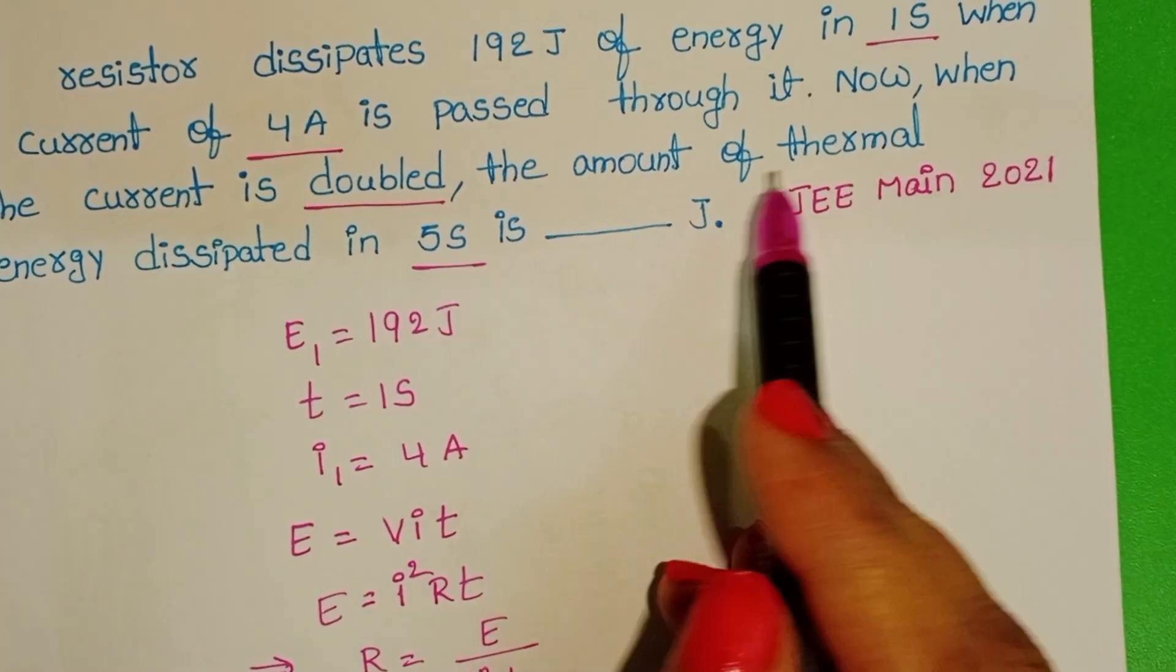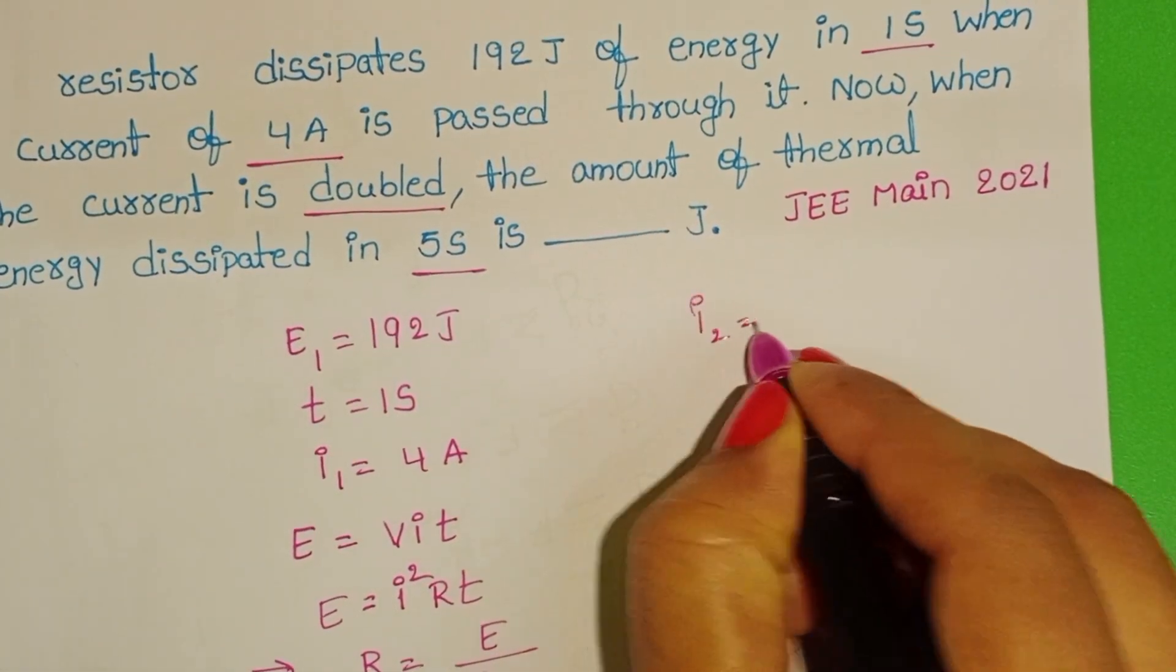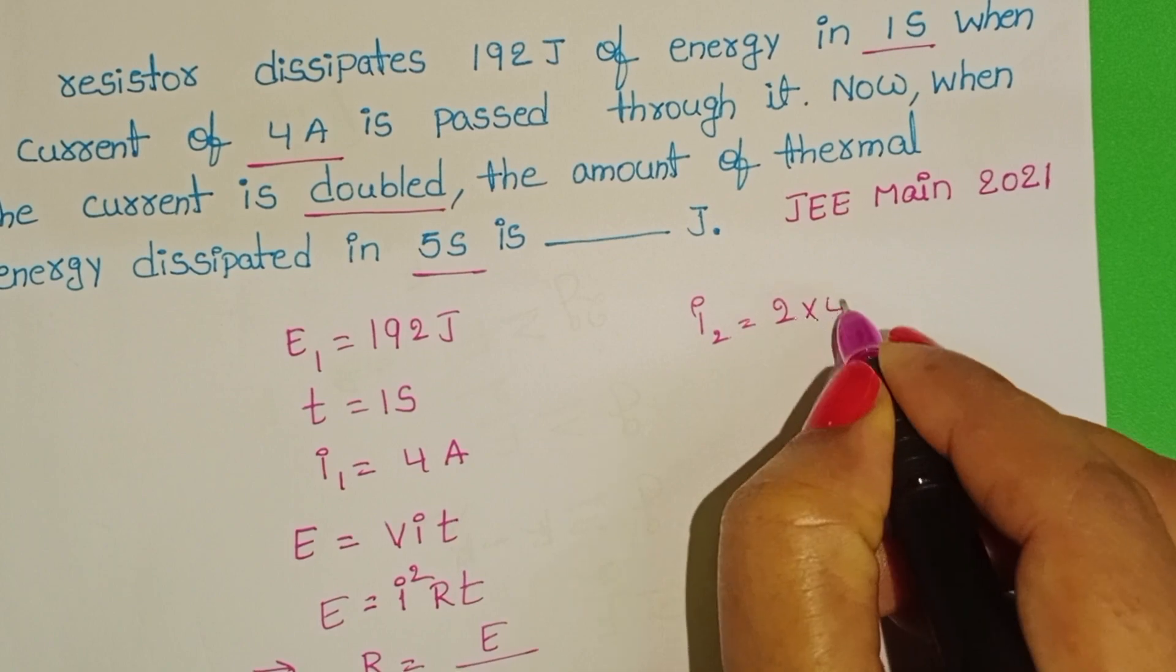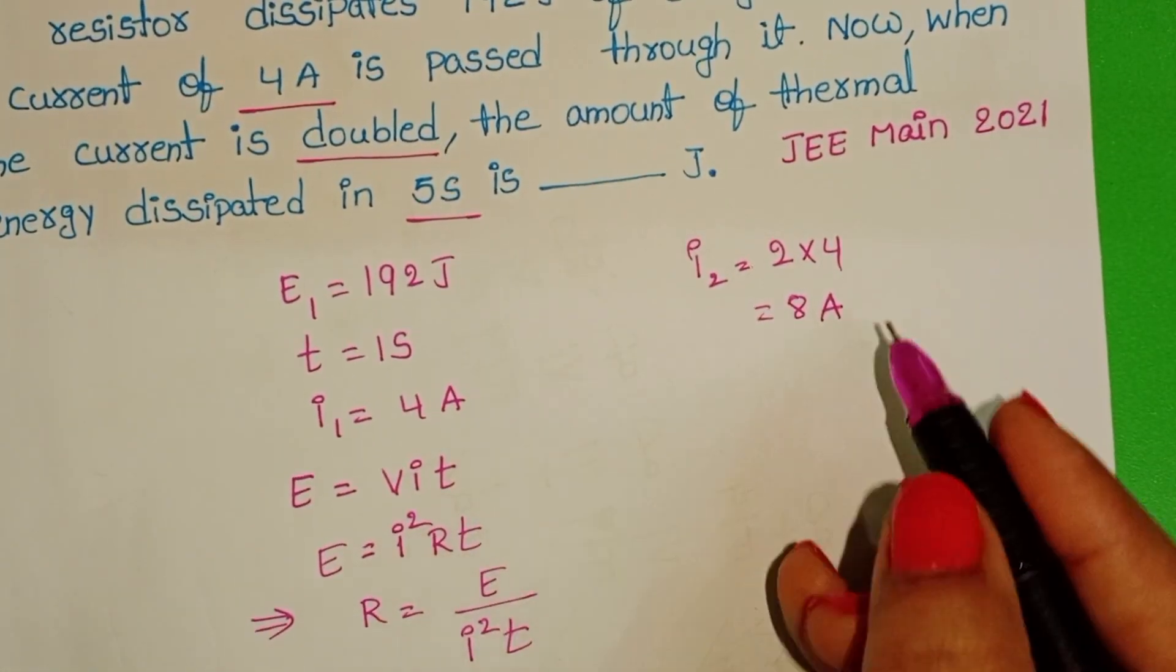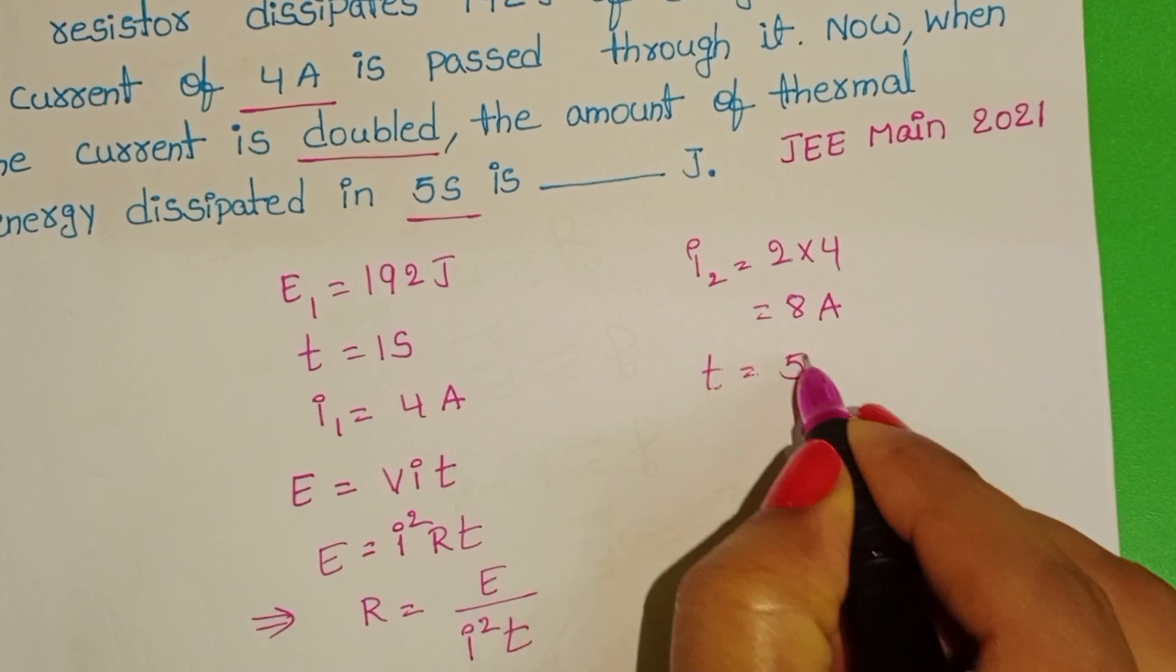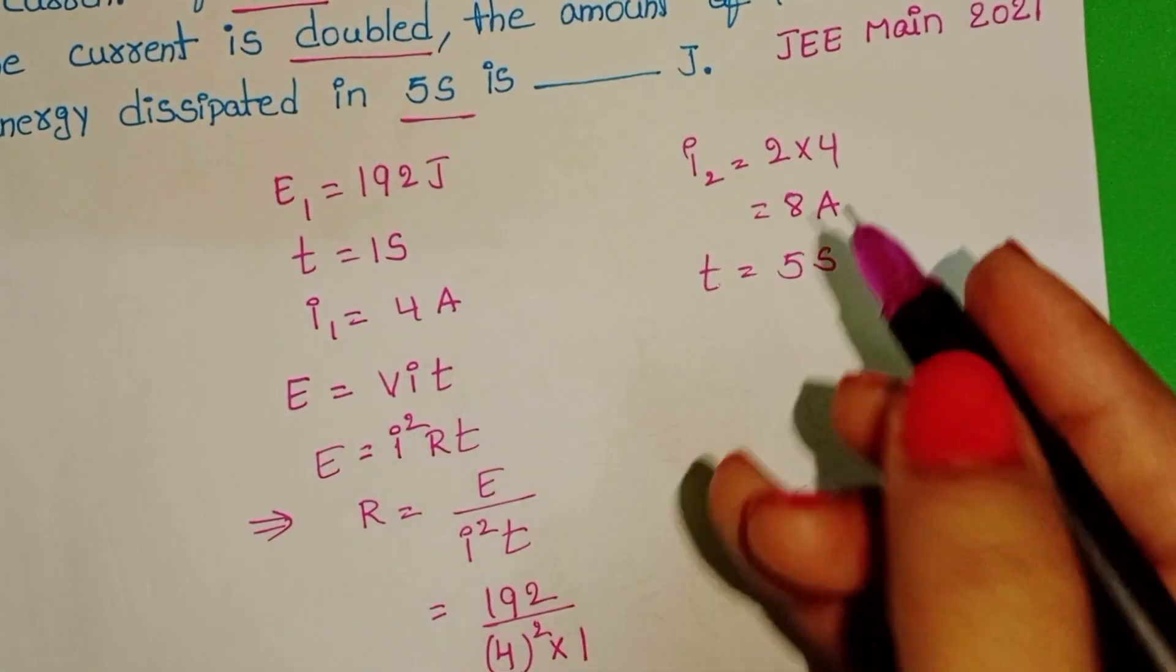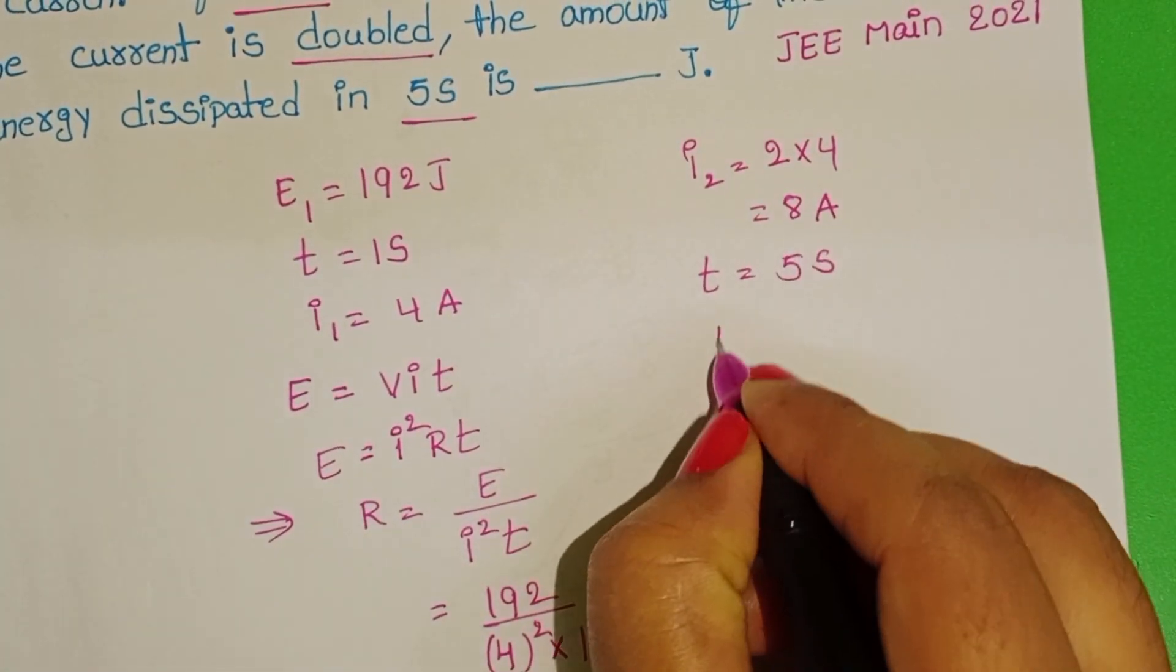After then, current is doubled: 2 into 4 amperes, then it becomes 8 amperes. Time is equal to 5 seconds. We have to find out the thermal energy E2.